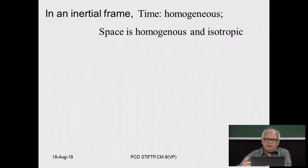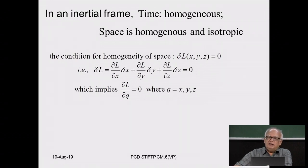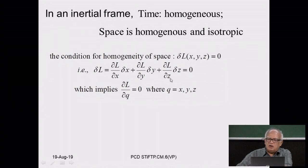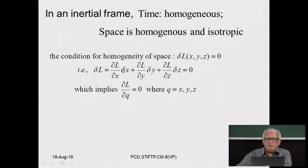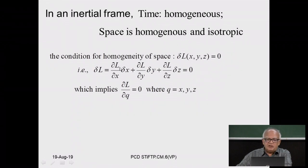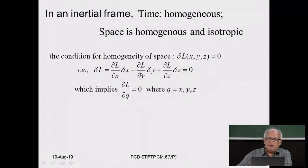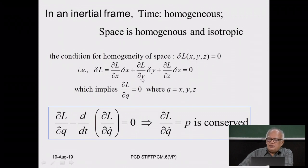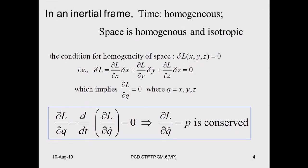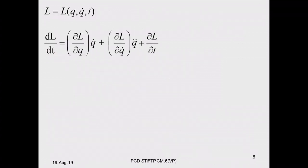In an inertial frame in homogeneous space, changing the Lagrangian by displacing coordinates by δx, δy, and δz leaves the Lagrangian invariant. For this to hold for arbitrary displacements, the coefficients — the partial derivatives — must individually be zero: ∂L/∂x = 0 and ∂L/∂y = 0. This is the statement connecting symmetry and conservation laws — the content of Noether's theorem.